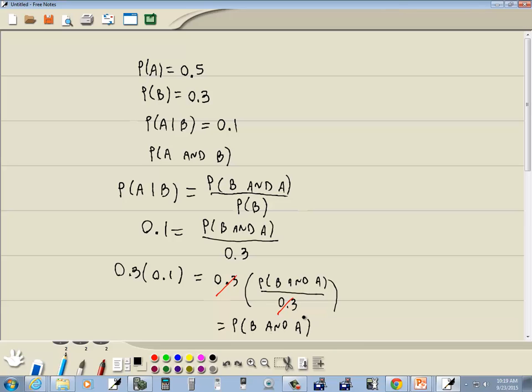And we're left with probability of B and A equals, and I'm not very good with decimals, but I think that's 0.03 if we're to plug in our calculator. 3 times 1 is 3, and then there's one decimal place here, one decimal place here, so this has to have two decimal places. So that would be our answer.